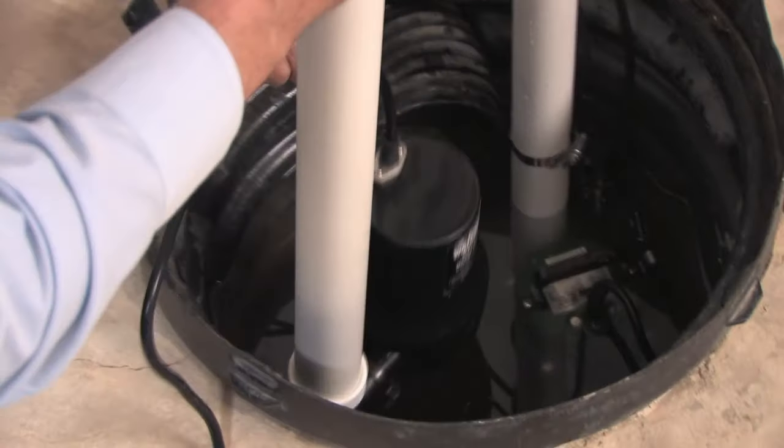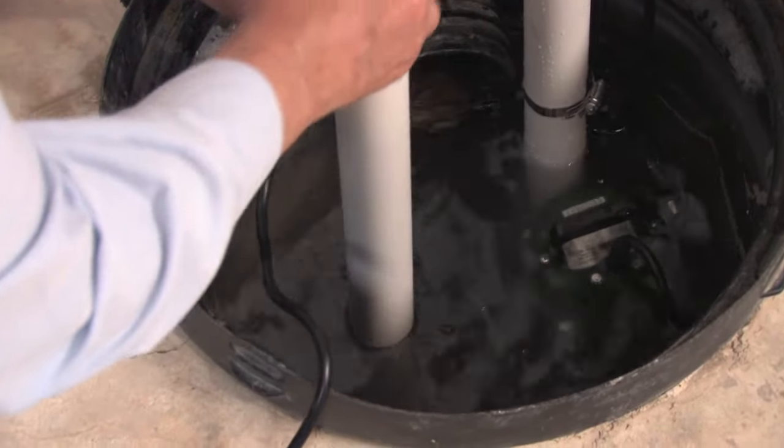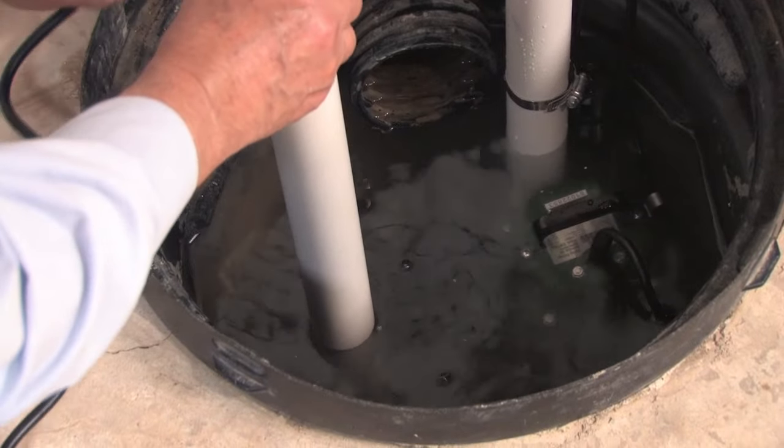Lower the pump with the PVC pipe attachment to the bottom of the sump floor next to the main AC pump. The pumps should not touch each other.